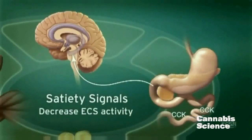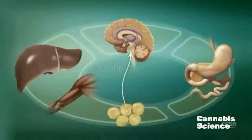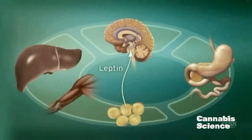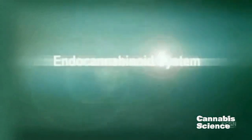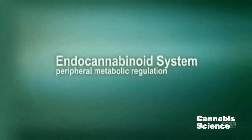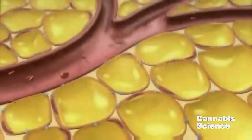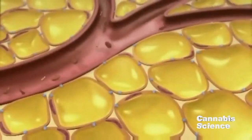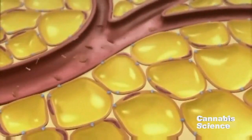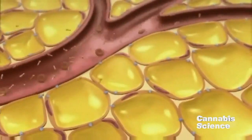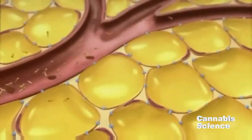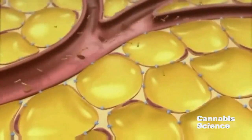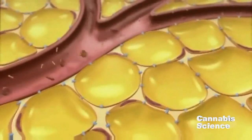An increase in the adiposity hormone leptin decreases endocannabinoid levels in the hypothalamus and decreases food intake. ECS regulation of peripheral metabolism influences energy balance. Stimulation of the ECS increases food intake and adiposity. Conversely, blocking CB1 receptors reduces food intake and adiposity.